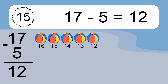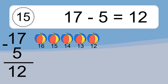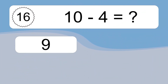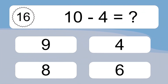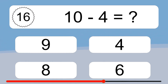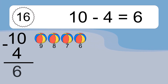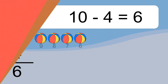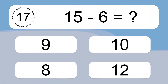17 minus 5 equals what? 17 minus 5 equals 12. Let's count it: 16, 15, 14, 13, 12. 10 minus 4 equals what? 10 minus 4 equals 6. Let's count it: 9, 8, 7, 6.